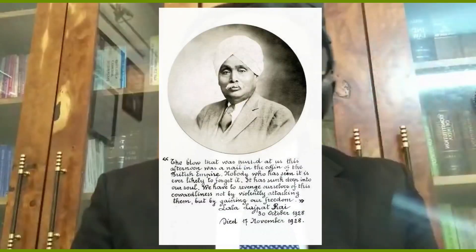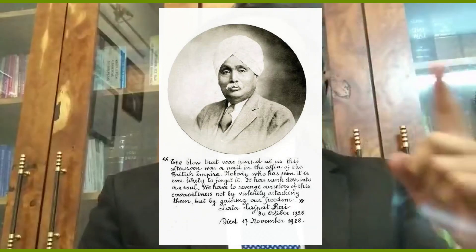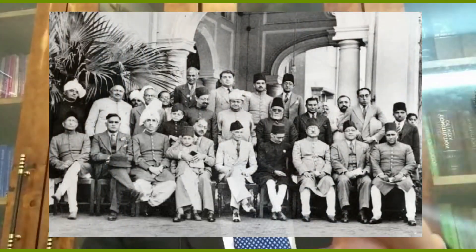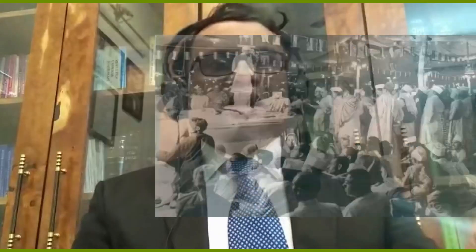The injuries suffered by Lala Lajpat Rai later led to his death — it was his dying declaration. Initially, our leaders were demanding dominion status from the British, but at the Lahore Session in December 1929, Pandit Jawaharlal Nehru declared — made a Ghoshna — of Poorna Swaraj, meaning complete independence.